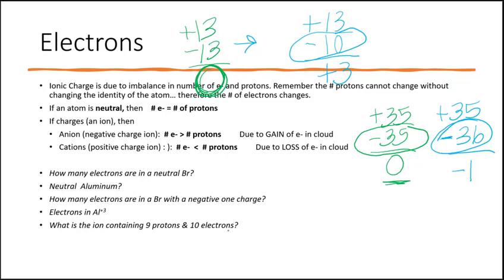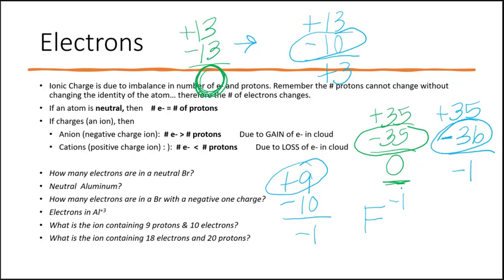What is the ion containing 9 protons and 10 electrons? 9 minus 10 is negative one — charge is negative one. Nine protons is fluorine, so it's fluorine with a negative one charge. What about the ion with 18 electrons and 20 protons? 20 protons is calcium. 20 minus 18 gives a plus 2 charge — so it's a calcium 2+ ion.